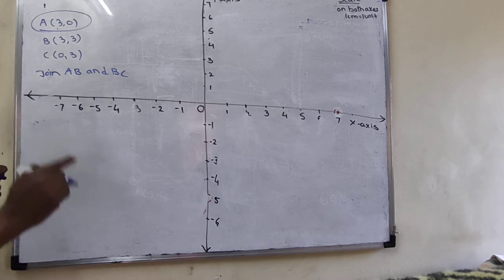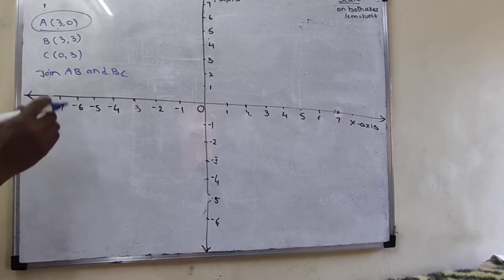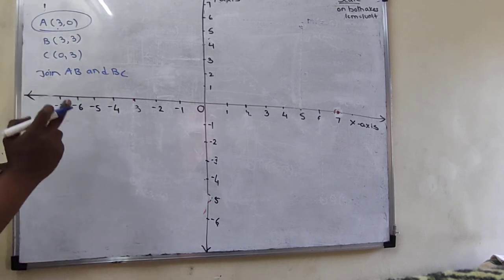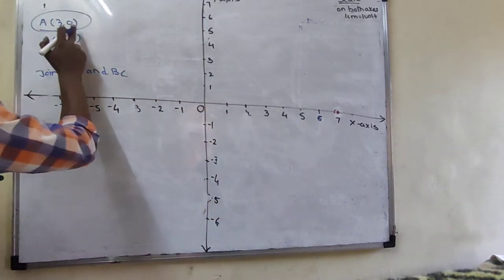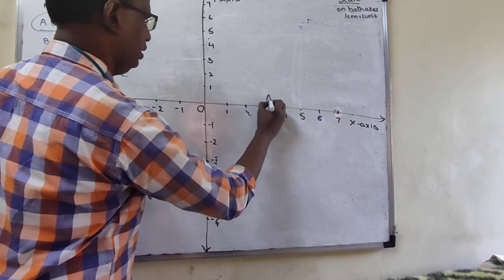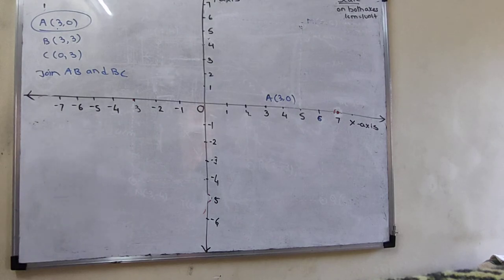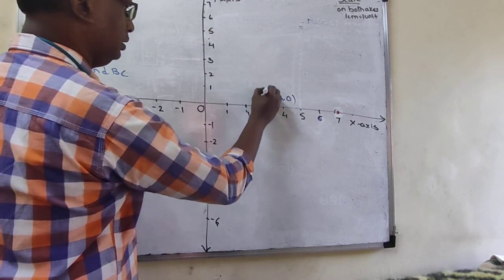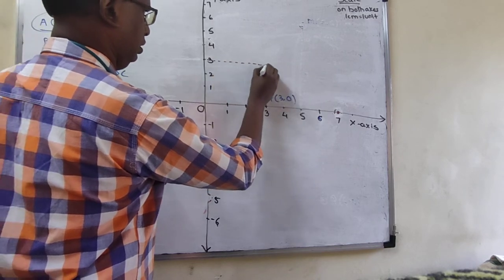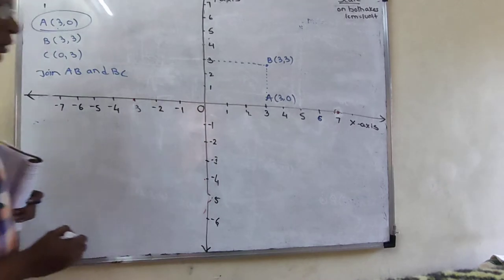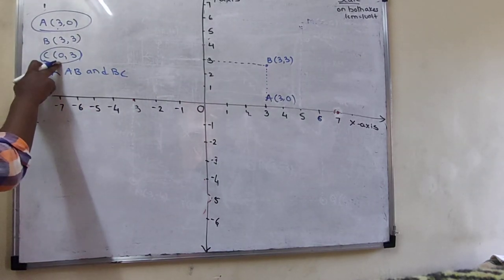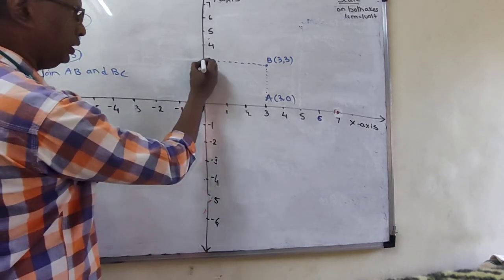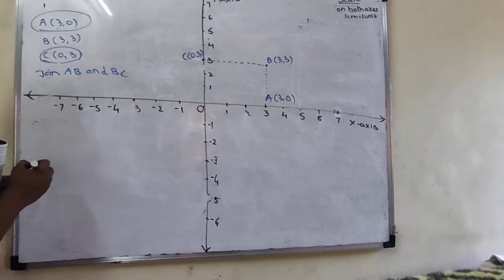First, plot A(3, 0). The y-coordinate is zero, so the point is on the x-axis — mark A at (3, 0). Next, B(3, 3): both coordinates are positive, first quadrant — draw dotted lines at x = 3 and y = 3 to get point B. Then C(0, 3): the x-coordinate is zero, so C is on the y-axis at (0, 3).